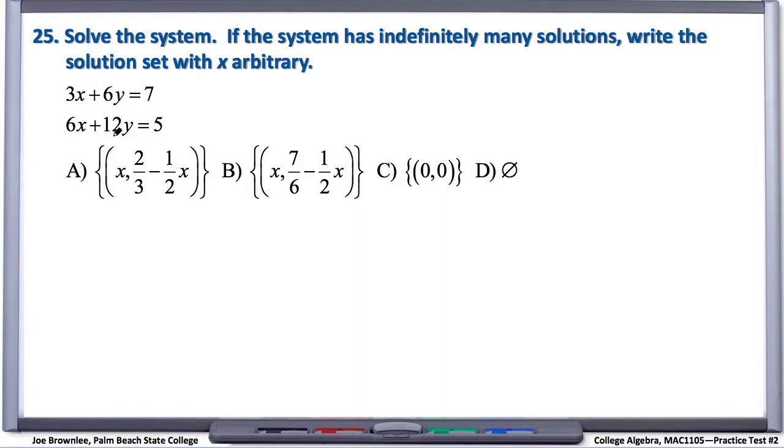Alright, so here we have a positive 6, here we have a positive 12. Let's go ahead and make the first equation have a negative 12 as the coefficient for y. And to do that, we will multiply the whole equation by negative 2.